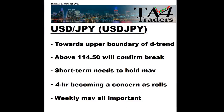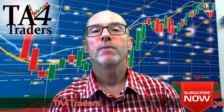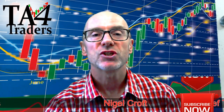So that's been TA for Traders looking at the US dollar versus the Japanese yen. The key takeaways are: we're towards the upper boundary of a downtrend, and a move above 114.5 will confirm that break. Short term needs to hold its moving averages, the 4-hour is becoming a concern as it rolls, and the weekly moving averages are all important. Thanks for watching. Please remember these videos are my opinions and are not an investment recommendation. Thank you.